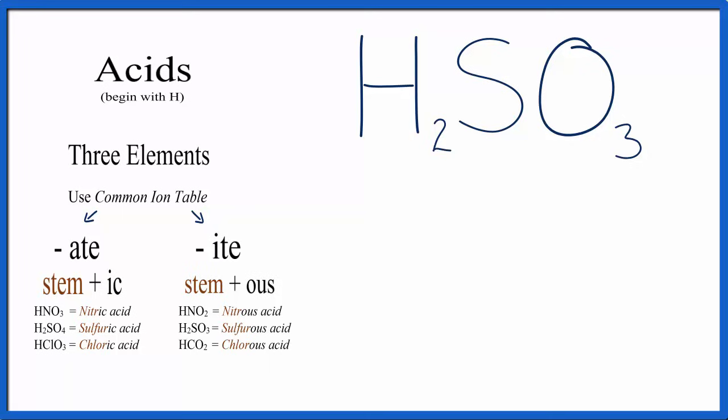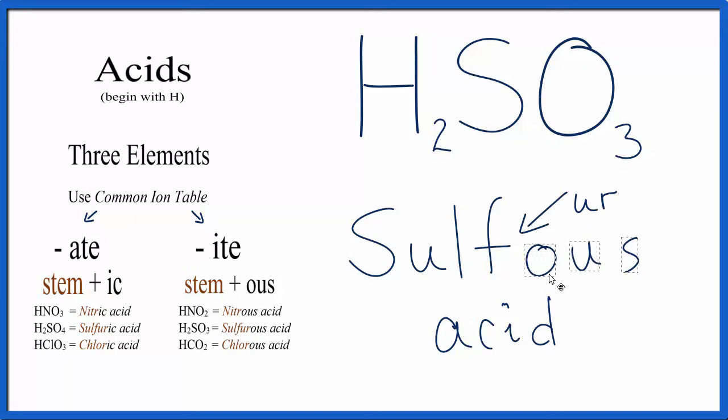Give this one a try, and don't let me trick you with sulfur this time. We have our three elements, and we have this SO3 here. We know that hydrogen's +1, and we have two of them, so +2. We'll look up SO3 2- on the common ion table, and we'll find that it's sulfite. So let's write that. We'll cross out the -ite and write -ous and add acid. Then we'll remember that we have to have the UR in there for sulfur, and we'll fix it. And that gives us the name sulfurous acid for H2SO3.